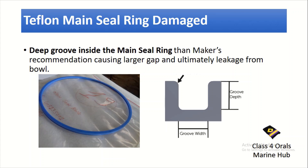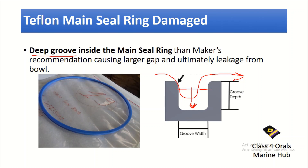The next important reason — which I myself have faced on my ship — is that the Teflon main seal ring is damaged. When the Teflon ring is damaged or a deep groove is built inside the main seal ring beyond the maker's recommendation, it will cause a large gap. Due to repetitive desludging, the groove depth increases, which causes leakage. Part of the oil starts leaking out. So the main seal ring is a reason for leakage.